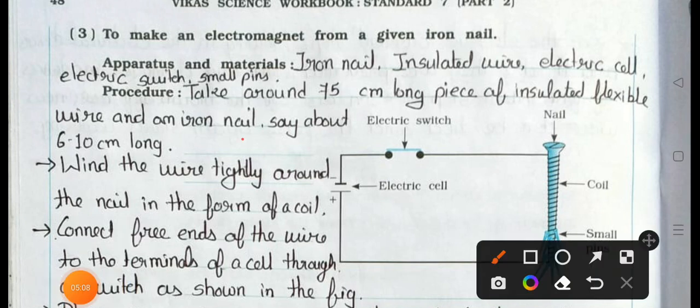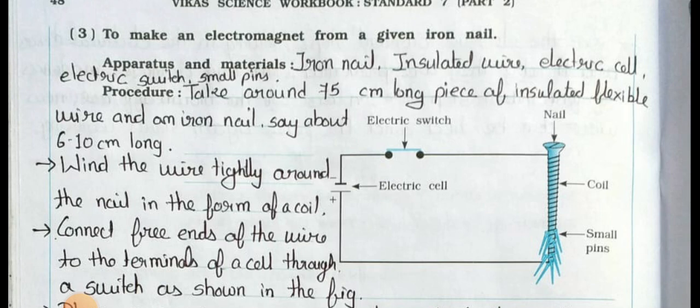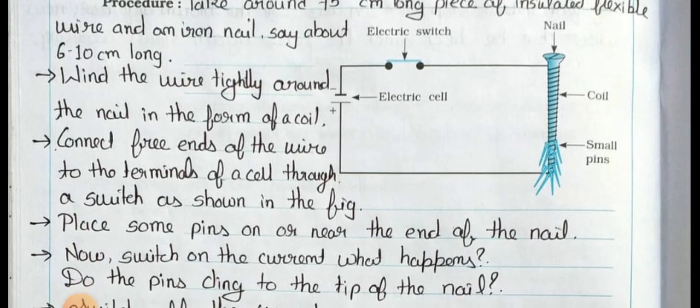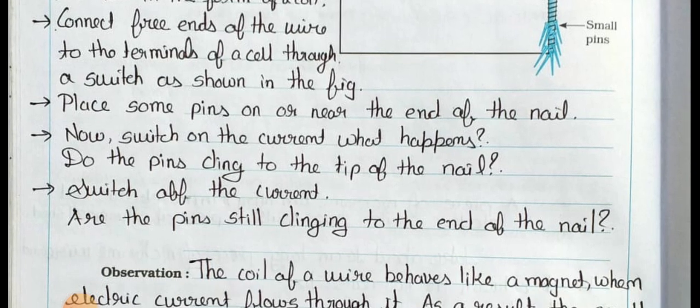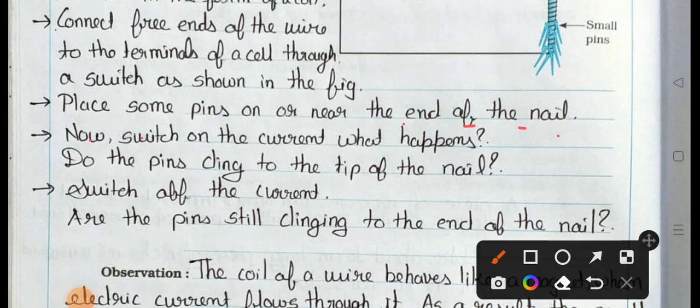Take an iron nail, say about six to ten centimeter long. Wind the wire tightly around the nail in the form of a coil. Connect free ends of the wire to the terminals of a cell through a switch as shown in the figure. Place some pins on or near the end of the nail. Now switch on the current. What happens? Do the pins cling to the tip of the nail? Switch off the current. Are the pins still clinging to the end of the nail? You have to observe it.